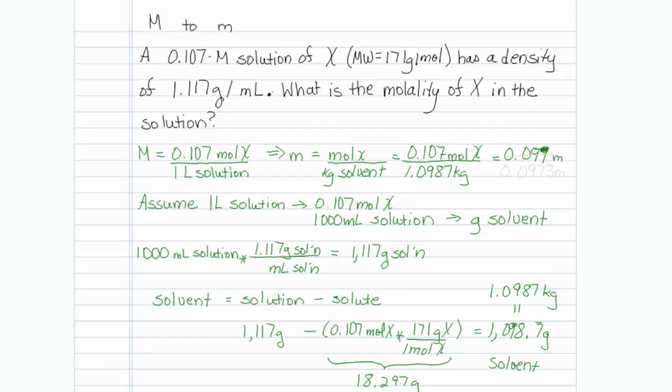Looking at it though, I think I should add just one more sig fig, because I did have three sig figs coming in, so I would feel better if I typed 0.0973 molal. That should make weather sign happy, and that's how you do that problem.